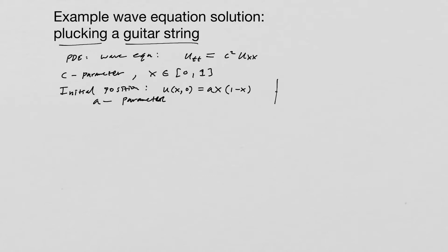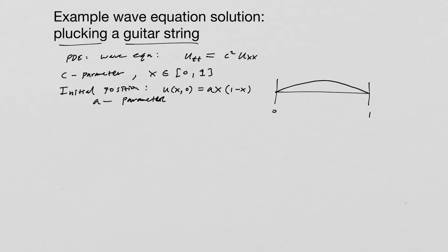What does this look like? Well, it's going to look like a parabola. That will be the initial position. And the initial velocity — we're going to say that U_T is equal to 0. We're going to have a zero initial velocity.